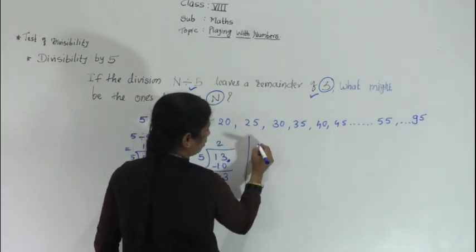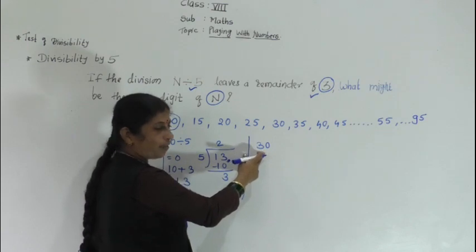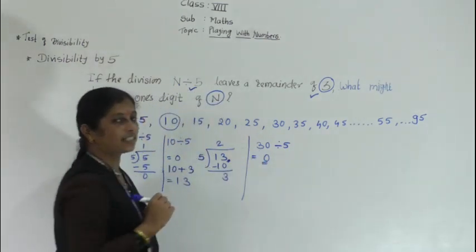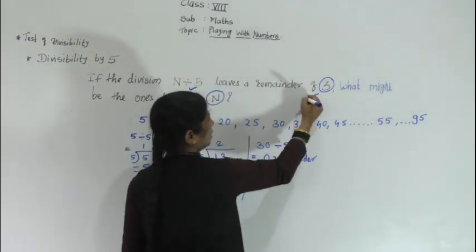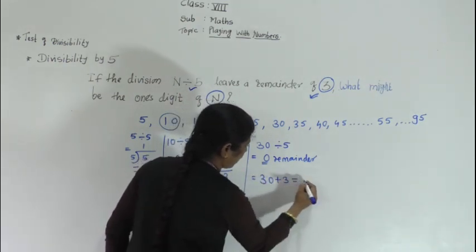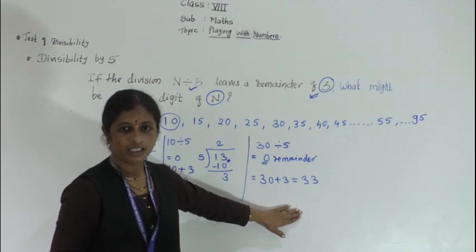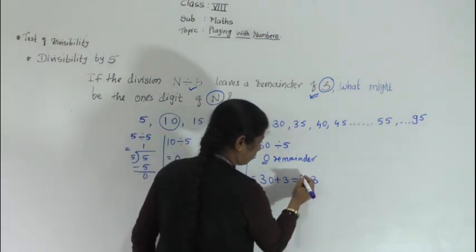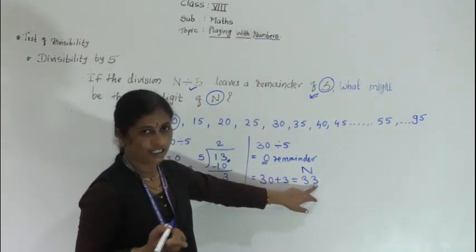Another example: take 30. It is completely divisible by 5 (5 sixes are 30), remainder 0. But we want remainder 3, so take 30 + 3 = 33. Dividing 33 by 5: 5 sixes are 30, remainder is 3. So for number N with remainder 3 when divided by 5, the unit digit of N is 3.